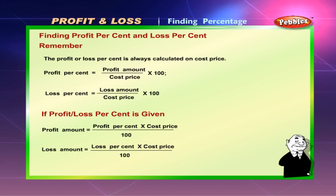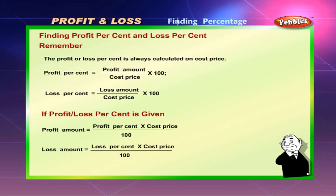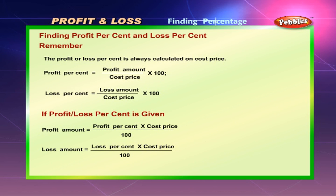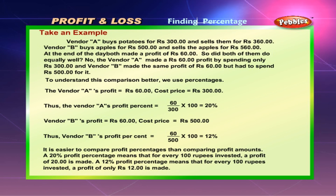Finding profit percent and loss percent. Remember, the profit or loss percent is always calculated on cost price. Profit percent equals profit amount divided by cost price, multiplied by 100. Loss percent equals loss amount divided by cost price, multiplied by 100. If profit or loss percent is given: profit amount equals profit percent multiplied by cost price divided by 100. Loss amount equals loss percent multiplied by cost price divided by 100.